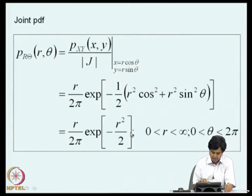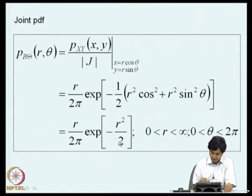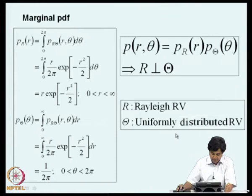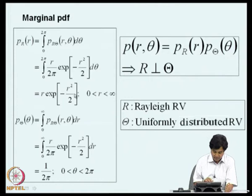The joint density function of r and theta is given by P_xy divided by J evaluated at x = r cos theta and y = r sin theta. Making the substitutions, we get the joint density function to be r/(2 pi) times exponential of minus r squared by 2, with r taking values from 0 to infinity and theta from 0 to 2 pi. To find the marginal probability density function of r, we integrate over theta from 0 to 2 pi. To find the marginal probability density function of theta, we integrate over r from 0 to infinity. The marginal density of r turns out to be of a form known as a Rayleigh random variable.